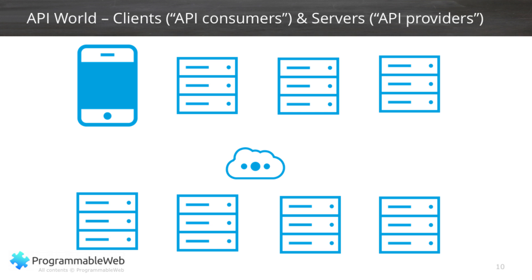In the API world, what this means is that any system — whether it's your smartphone, a server, a desktop computer, it doesn't matter — can connect to any system. And you can change things underneath. So if you have all of these client-consumer systems on top, going through the cloud, through a network, connecting to something underneath, that something underneath can be anything you want it to be, so long as it conforms to the contract.